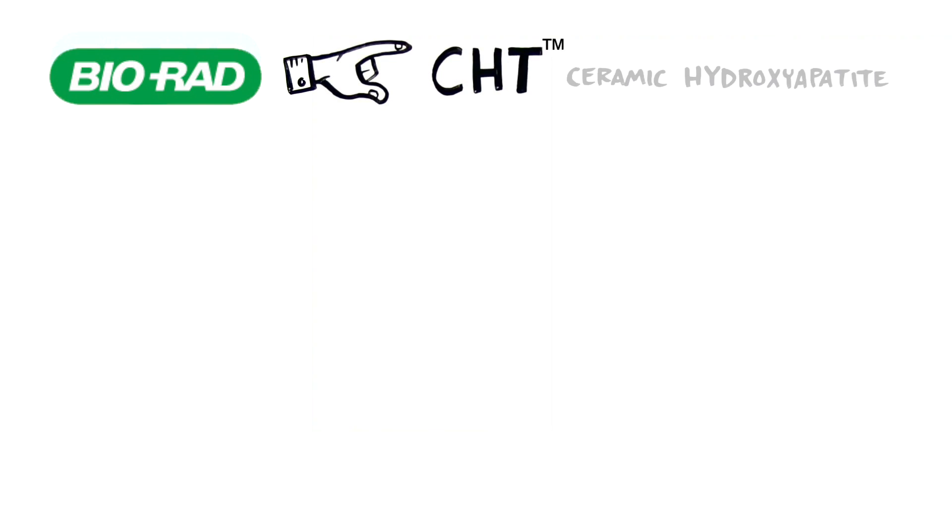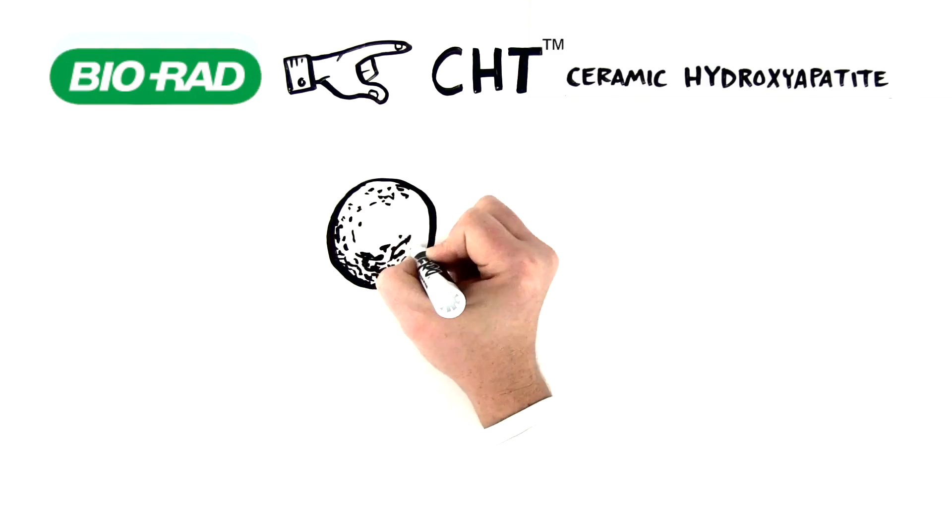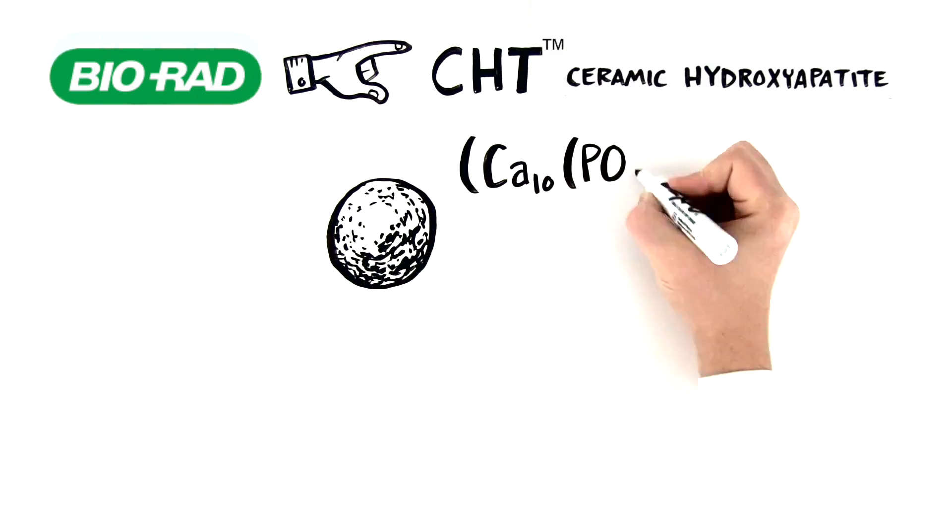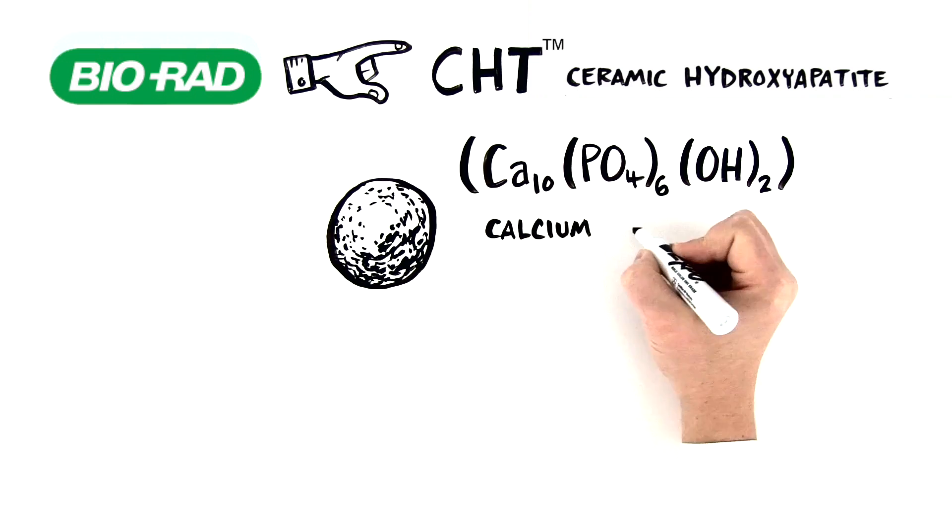CHT, Ceramic Hydroxyapatite. CHT is a spherical, macroporous form of hydroxyapatite, formed from the chemical combination of calcium and phosphate salts.